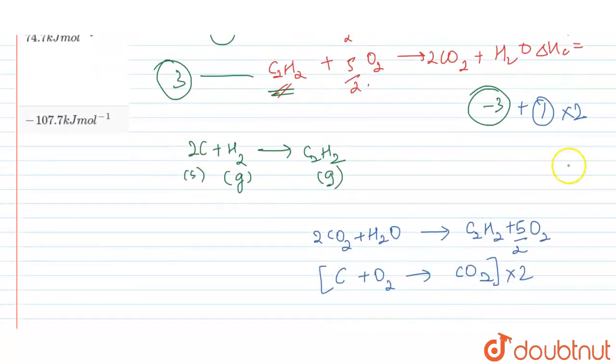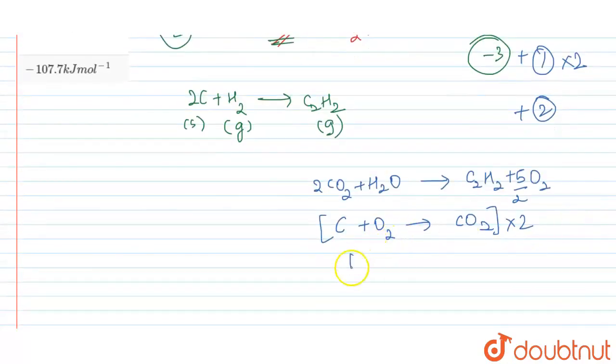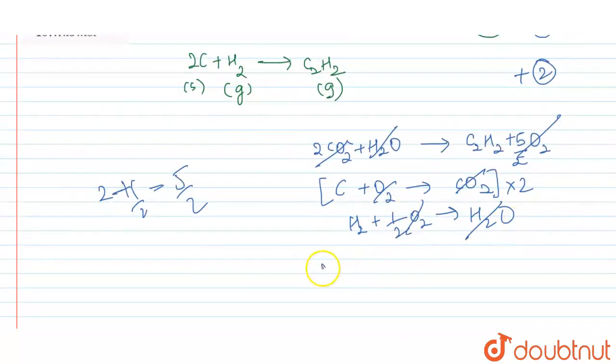Finally add equation number 2: H₂ + ½O₂ → H₂O. When we add, the O₂ terms and CO₂ and H₂O cancel. Finally we get 2C + H₂ → C₂H₂. We have our target equation.